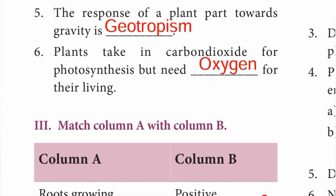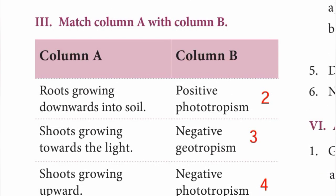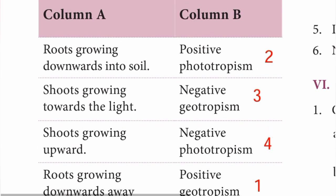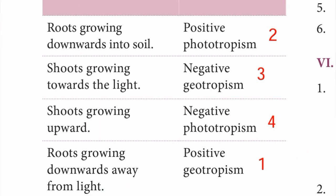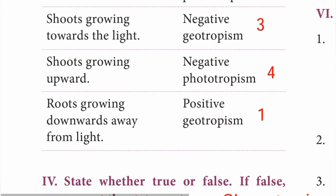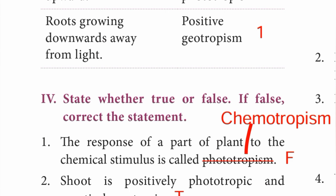Sixth one: plants take in carbon dioxide for photosynthesis but need oxygen for their living. Answer is oxygen. Roman number three - match column A with column B. Roots growing downwards into soil - answer is positive geotropism. Shoots growing towards the light - positive phototropism. Shoots growing upward - negative geotropism. Roots growing downwards away from light - negative phototropism. The order is two, three, four, one.